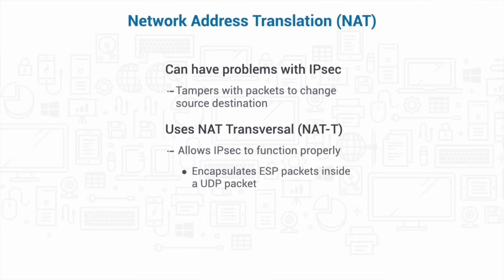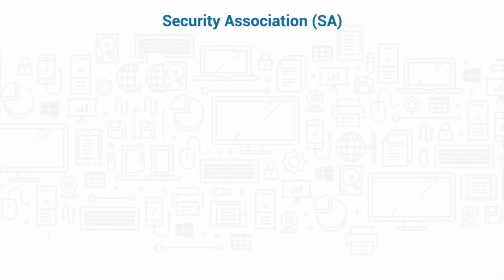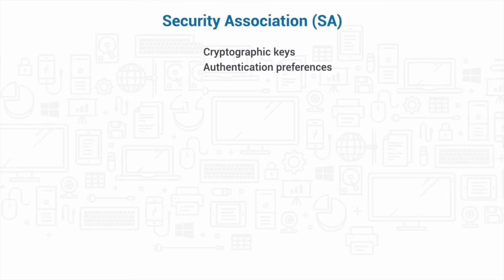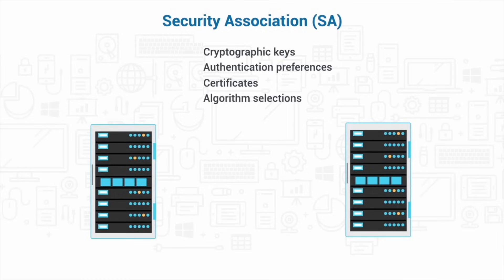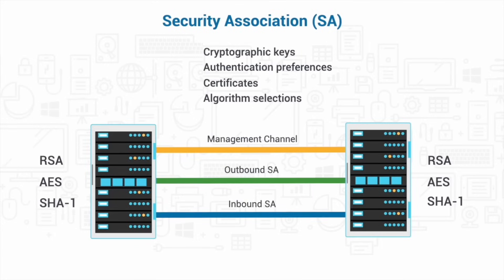Another part of IPsec to consider is the set of specifications that negotiate between nodes to establish the IPsec relationship, called a security association, or SA. These specifications can include cryptographic keys, authentication preferences, certificates, and algorithm selections. For example, both endpoints can agree to use the SHA-1 hashing algorithm instead of MD5, AES for symmetric encryption, and RSA for asymmetric encryption. Each tunnel of data uses three different security associations: first, a management channel is established so routers or network nodes can exchange security information; then an outbound security association and an inbound security association are established, each with a unique identifier included with each packet sent across the channel.